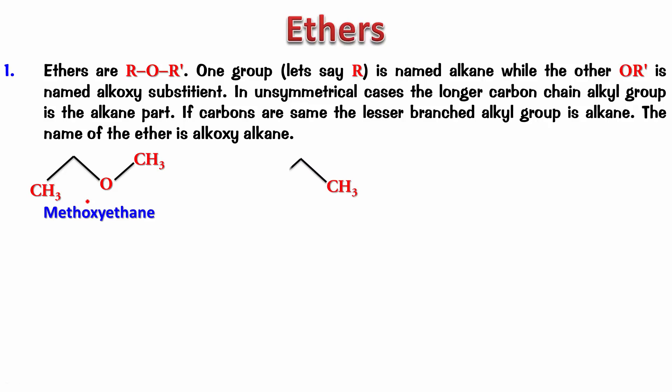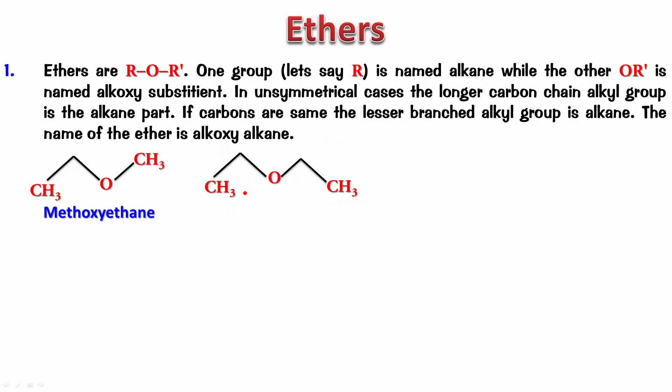Let's try this one. On one side I've got two carbon atoms, and on the other side I also have two carbon atoms — both the same. It doesn't matter which is alkoxy and which is alkane. So it is ethoxyethane.